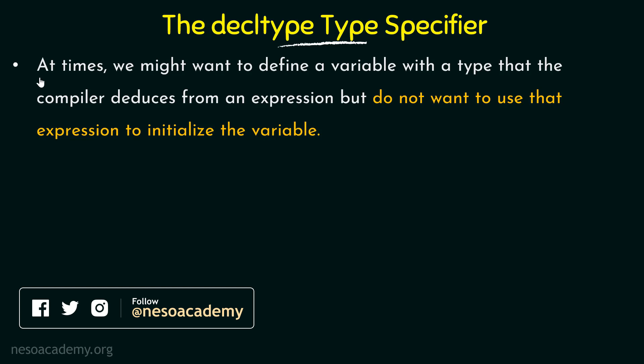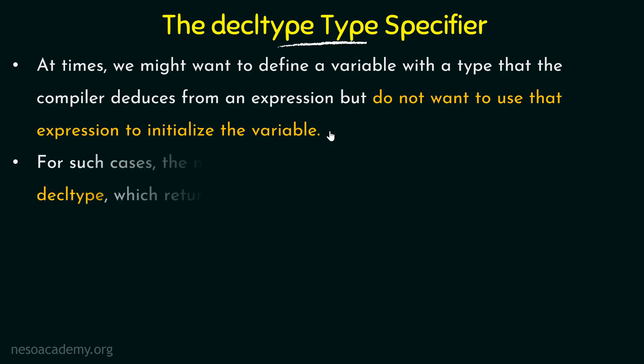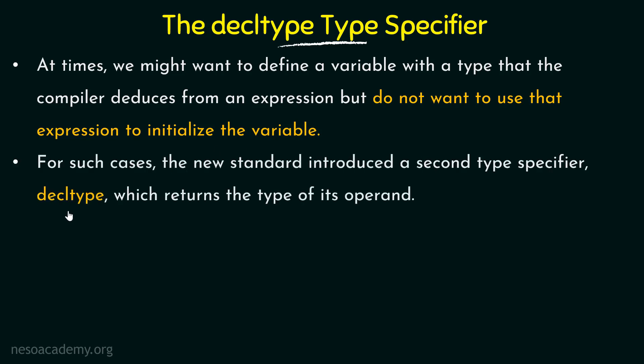Coming to the use of the decltype type specifier — at times we might want to define a variable with a type that the compiler deduces from an expression, but do not want to use that expression to initialize the variable. So there may be times when we want the compiler to deduce the type from an expression, evaluate it, get the returned type, but not use that expression to initialize the variable. In those cases, we have the decltype type specifier.